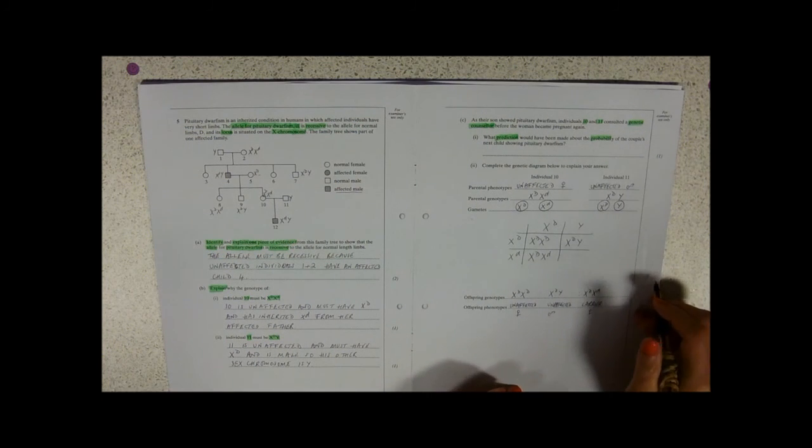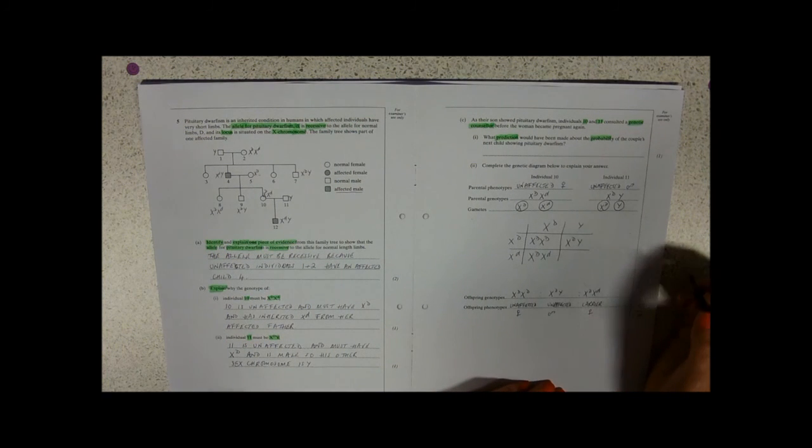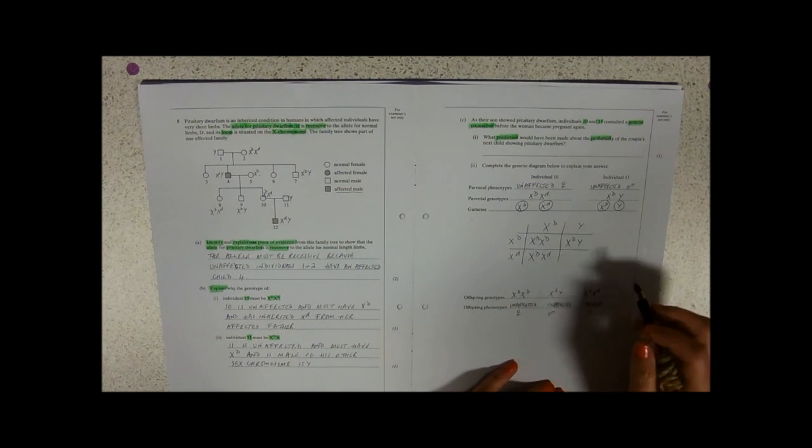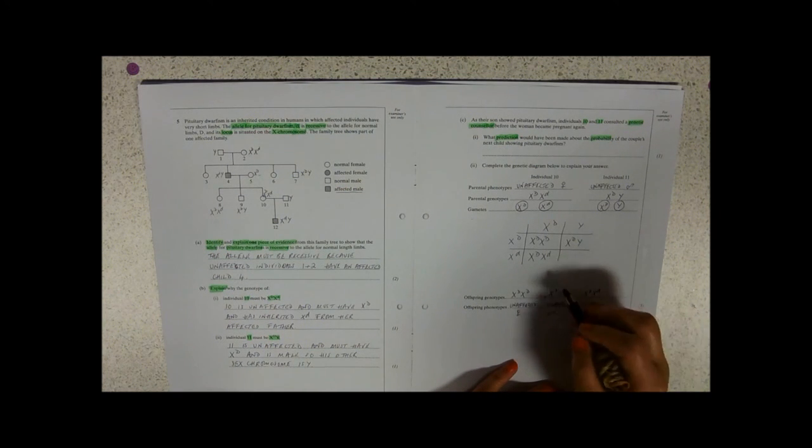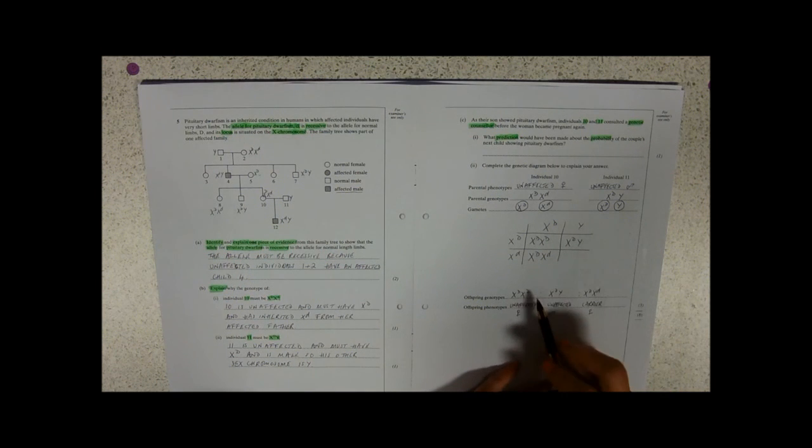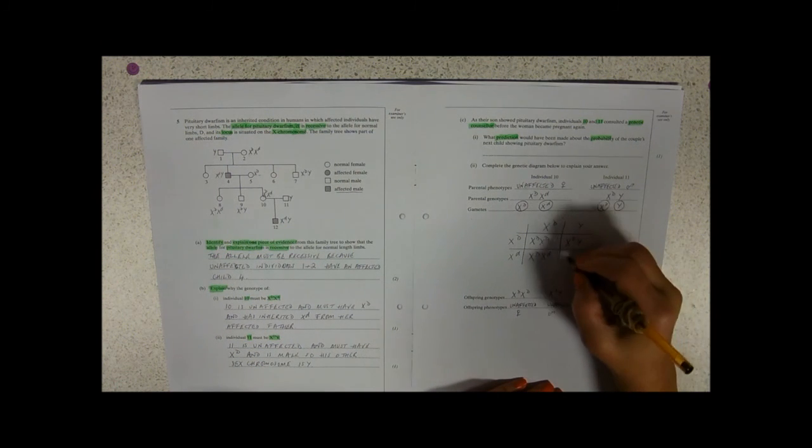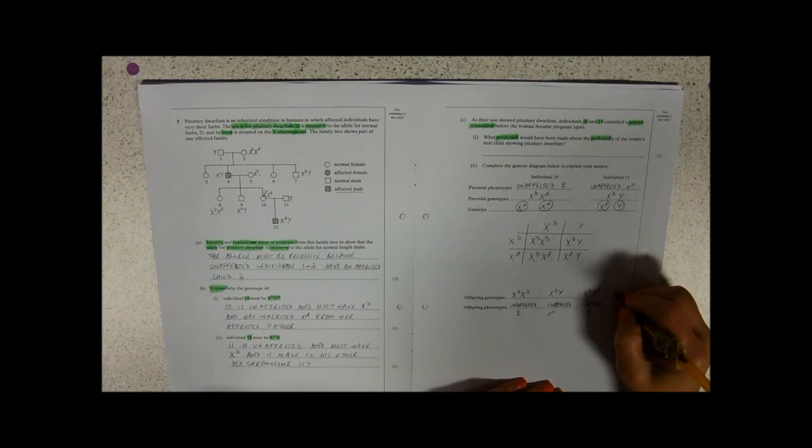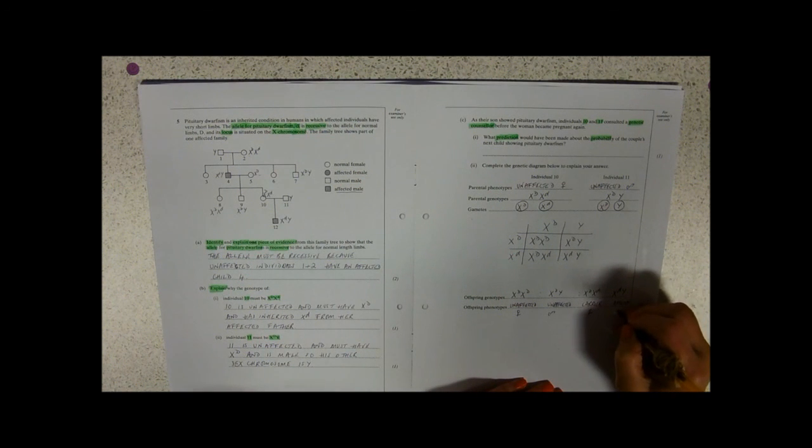So I'm going to call her a carrier. And of course, they've not had any subsequent children. They wouldn't know if they got a girl, whether it was just because it's unaffected, they wouldn't know whether their child's genotype is X big D X big D or X big D X little d. And then last but not least, X little d Y. So affected male.